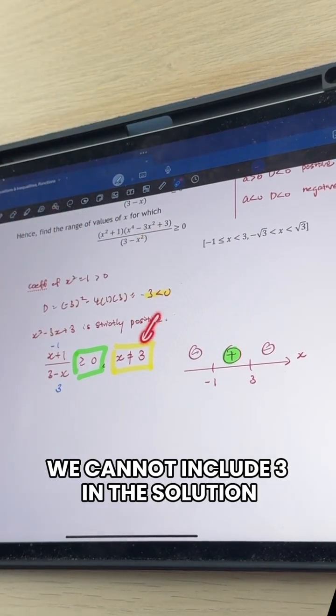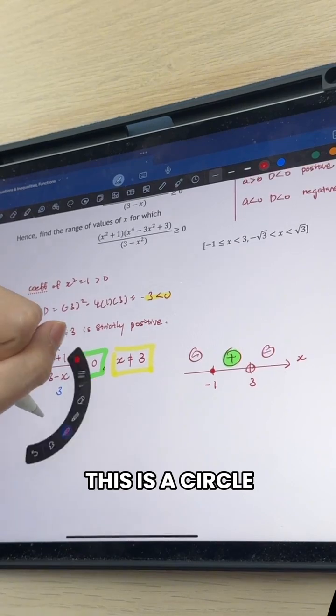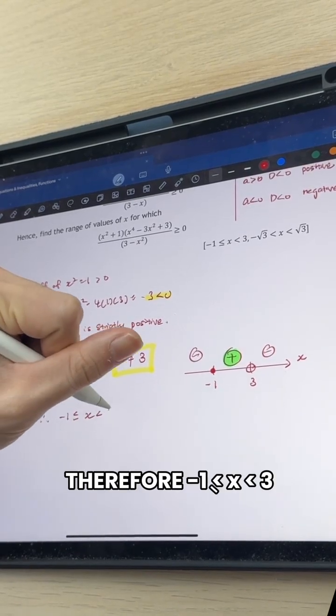But wait, we cannot include 3 in the solution, but we can include negative 1. So we have a covered dot here. This is a circle. Therefore, x must be between negative 1 and 3 exclusive.